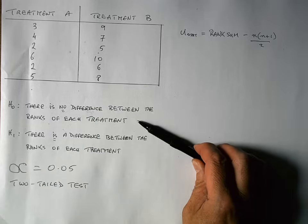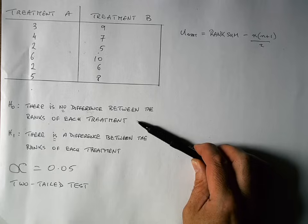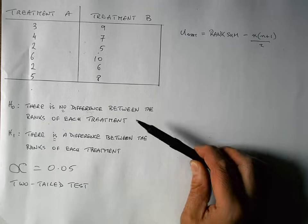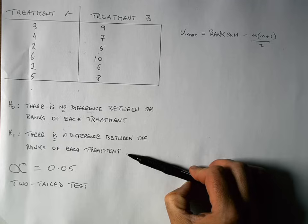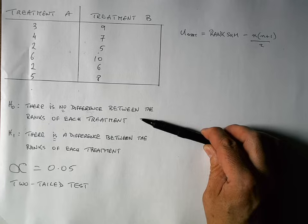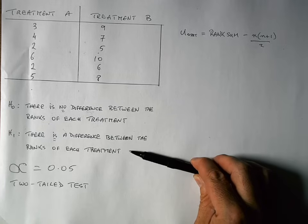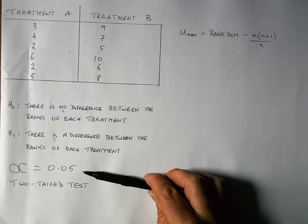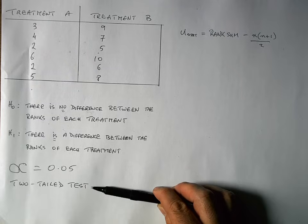As it's a test, let's outline our null and alternative hypotheses. Our null hypothesis is that there is no difference between the ranks of each treatment. Mann-Whitney is a rank-based test. Our alternate or research hypothesis is that there is a difference between the ranks of each treatment — in other words, the null says both treatments are the same, and the alternative says they are not. We're going to test at an alpha value of 0.05 and, as we haven't indicated a direction, we're going to have a two-tailed, unpaired or independent Mann-Whitney test.